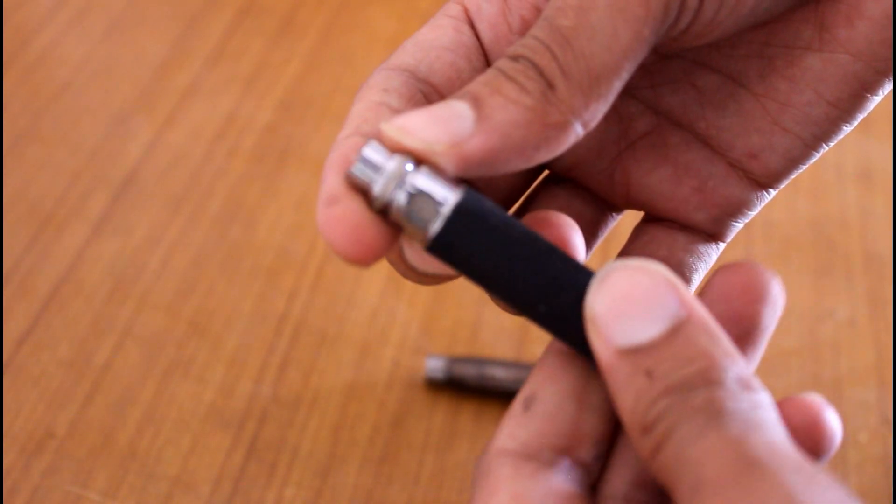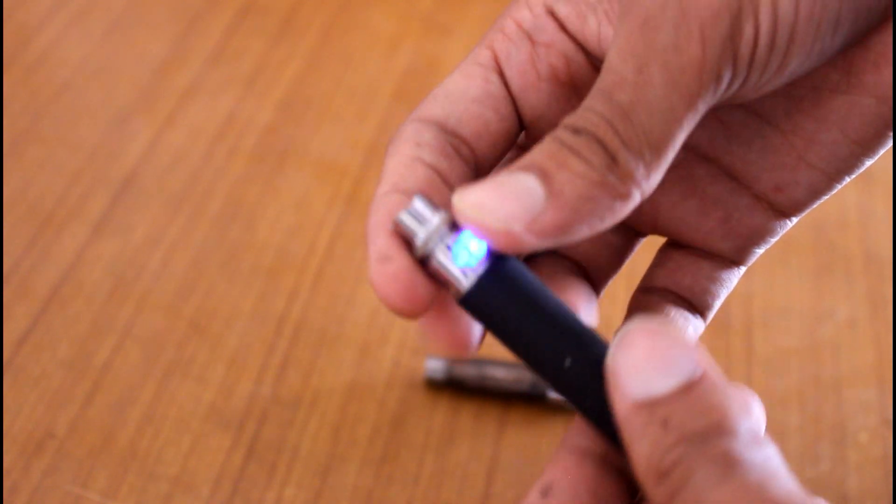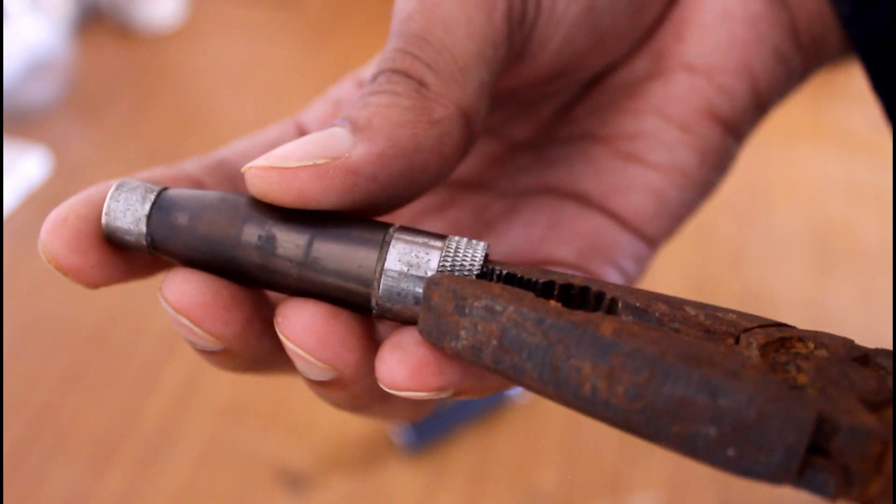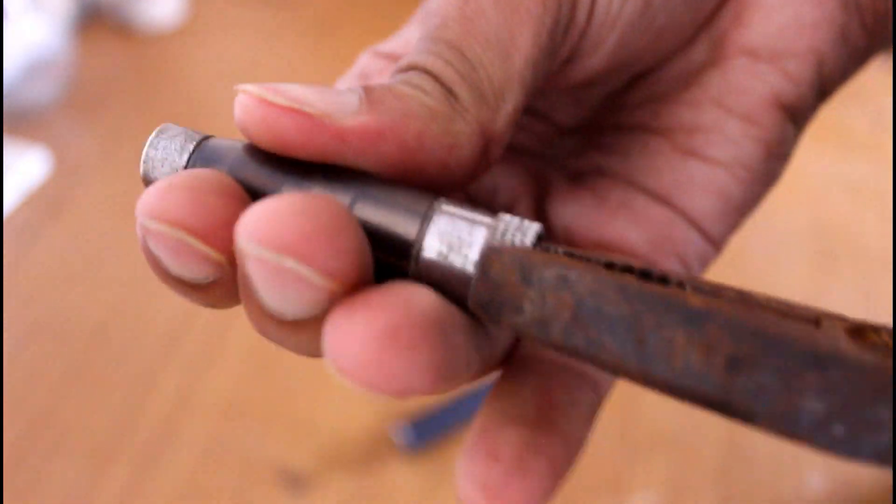So this part contains the circuit and the power side, and there is an atomizer or the vaporizer in this module. Here you can see.